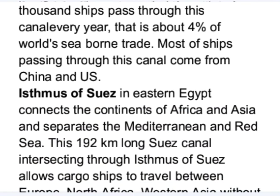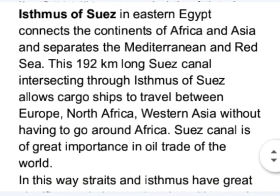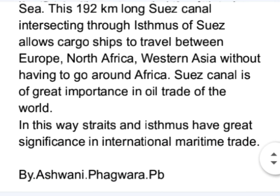The next example is the Isthmus of Suez in eastern Egypt, which connects the continents of Africa and Asia and separates the Mediterranean and Red Seas. There is a 192-kilometer-long Suez Canal intersecting through the Isthmus of Suez, allowing cargo ships to travel between Europe, North Africa, and Western Asia without having to go around Africa. The Suez Canal is of great importance in the oil trade of the world. In this way, straits and isthmuses have great significance in international maritime trade.